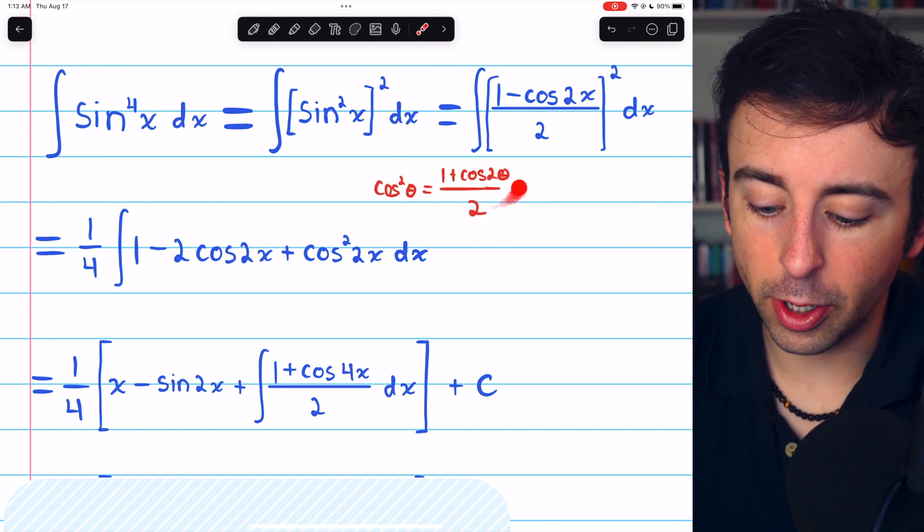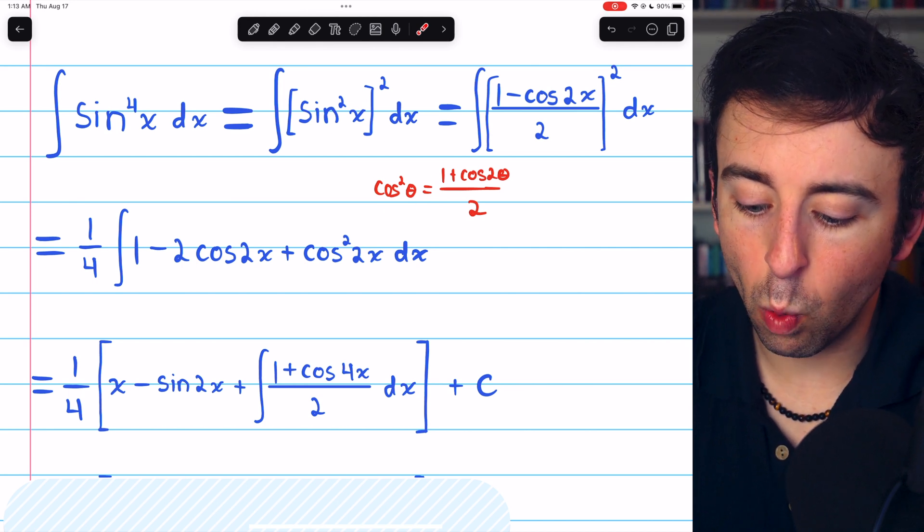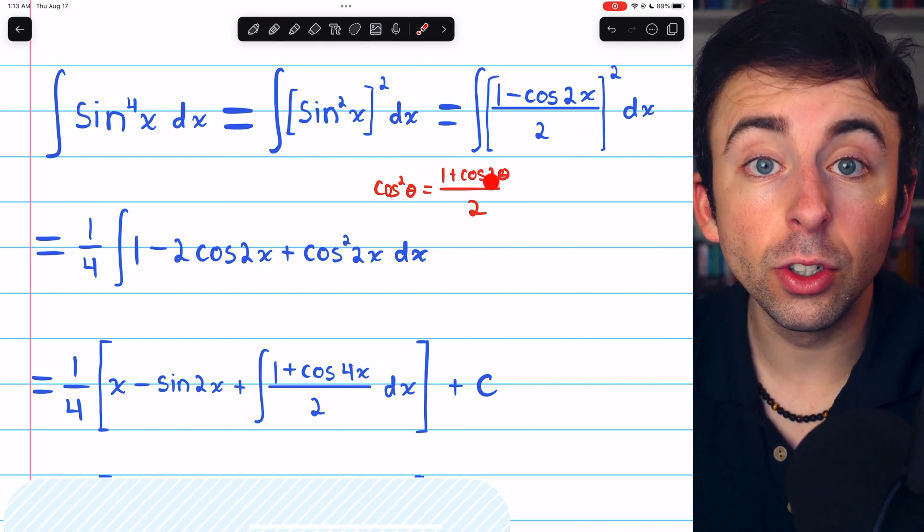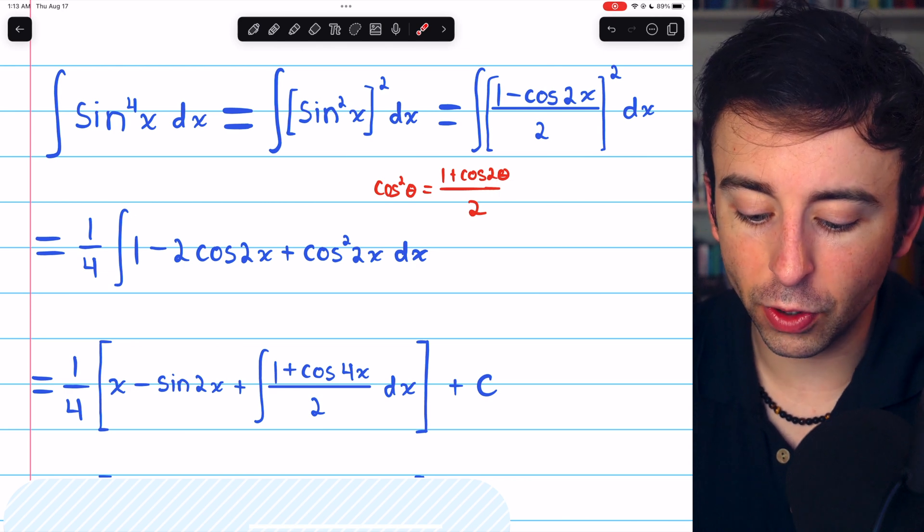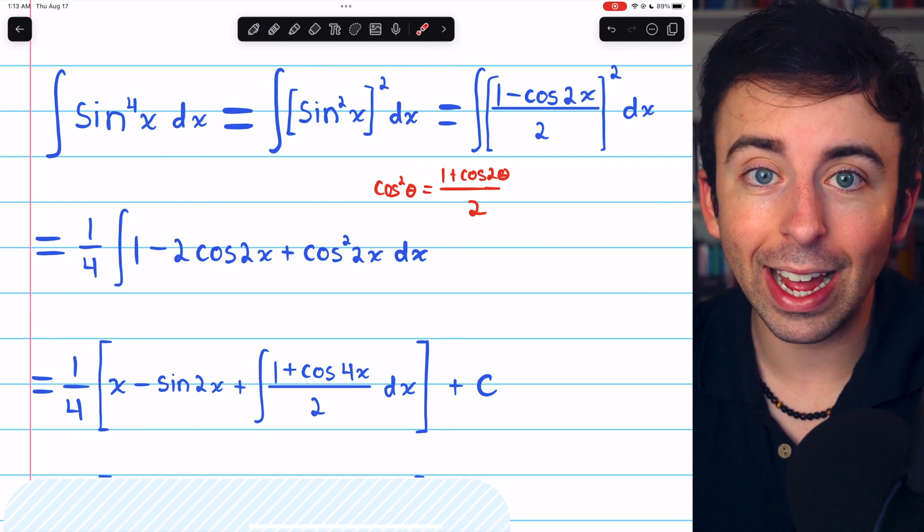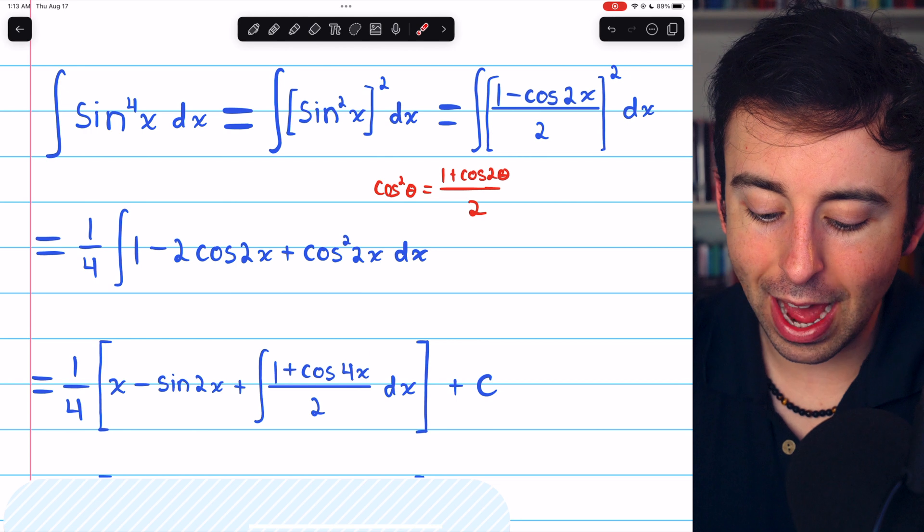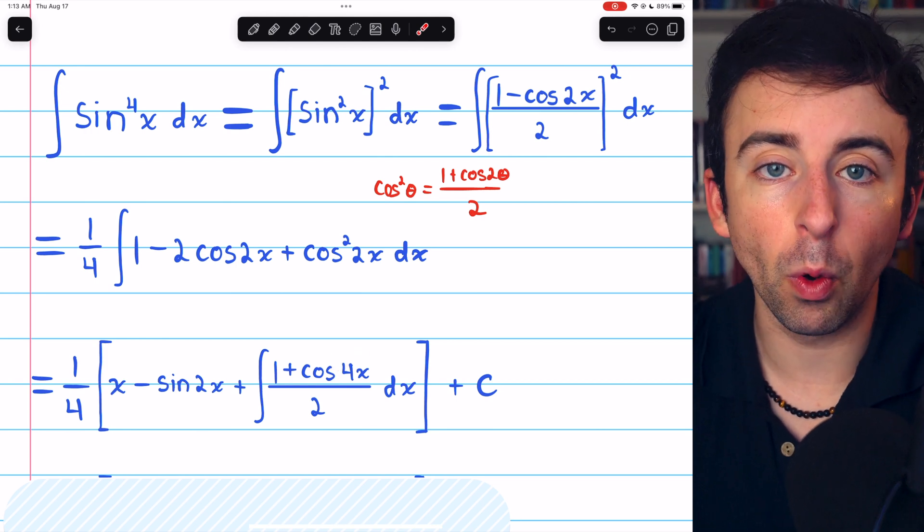This is the identity we're using, in case you forgot it. Cosine squared theta equals 1 plus cosine 2 theta all over 2. In this case, when we're applying the identity to cosine squared of 2x, this input of 2x is getting doubled. That's why we end up with the 4x.